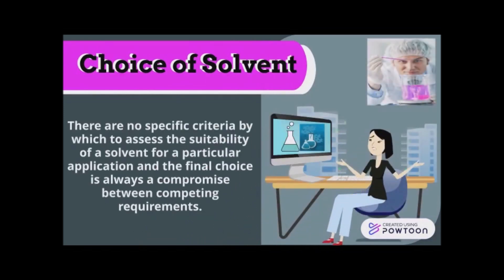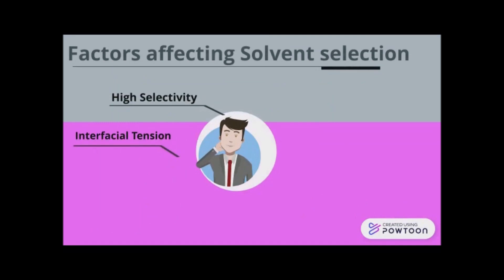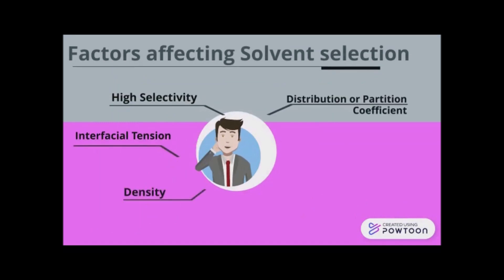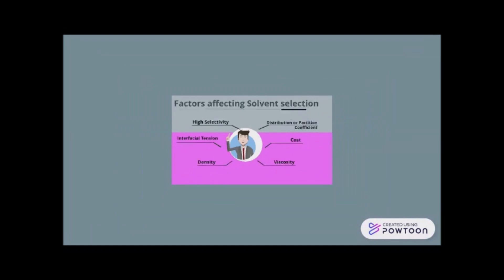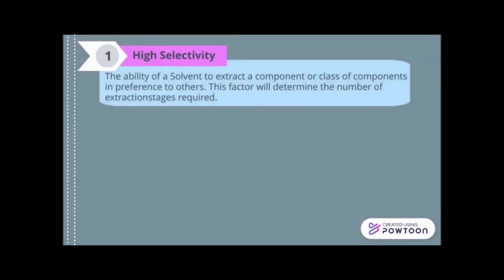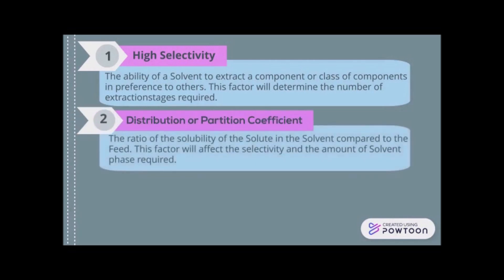There are no specific criteria by which to assess the suitability of a solvent for a particular application, and the final choice is always a compromise between competing requirements. The first criterion is high selectivity — the ability of the solvent to extract a component in preference to others, which dictates the number of extraction stages required. Next is the distribution or partition coefficient: the ratio of solubility of the solute in the solvent compared to the feed, which determines selectivity and the amount of solvent phase required.